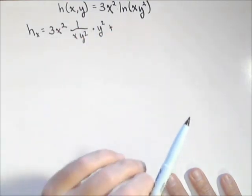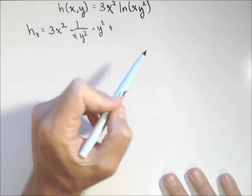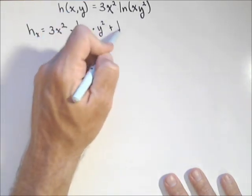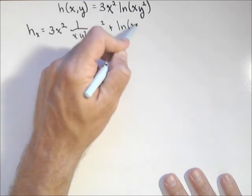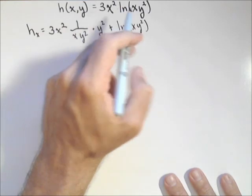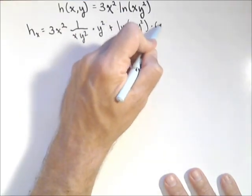Okay, you gotta get really used to that with partial derivatives. Once you get used to that, it'll actually become a little bit easier. Now we're gonna hold this part constant, ln of x, y squared times the derivative of three x squared, which is six x.